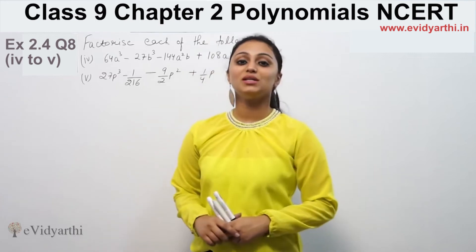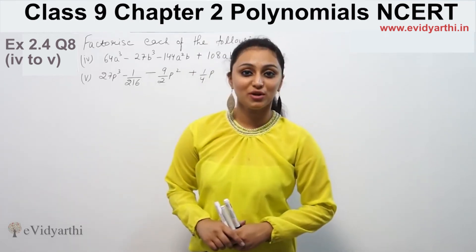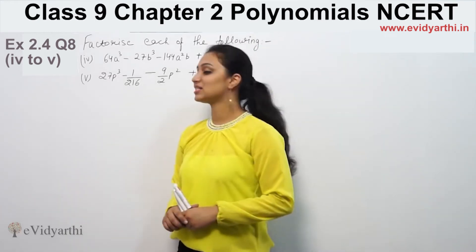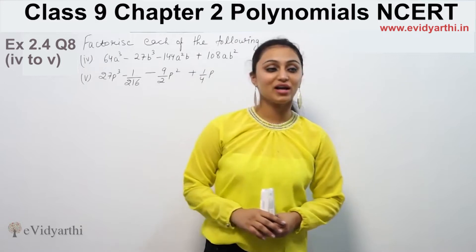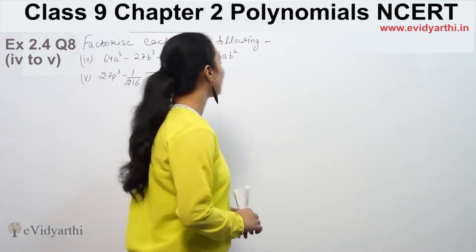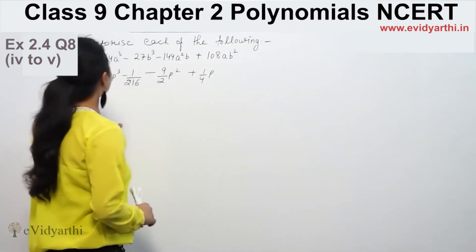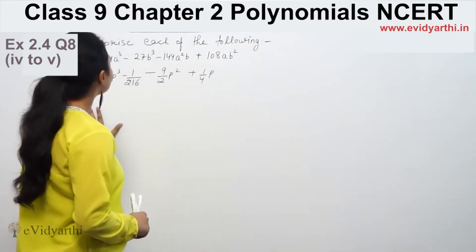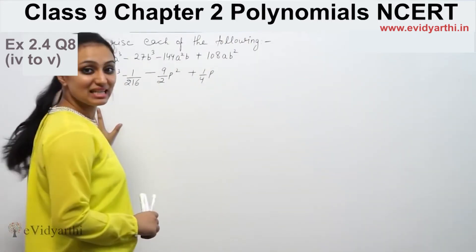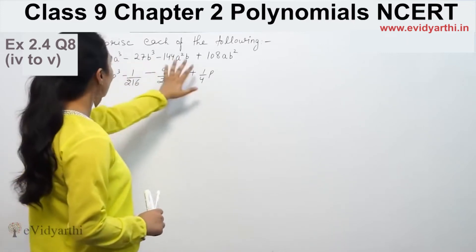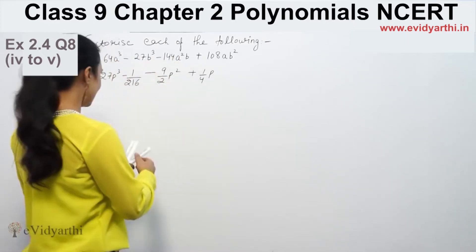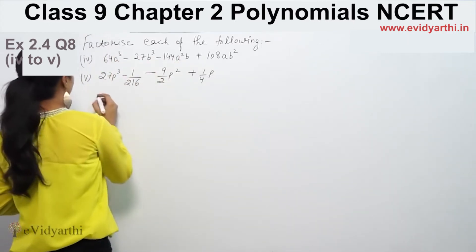Hi, this is Khushku with another question on polynomials. This is question number 8 from exercise 2.5, page number 49 from NCRT. This asks us to factorize each of the following. This is the fourth part.